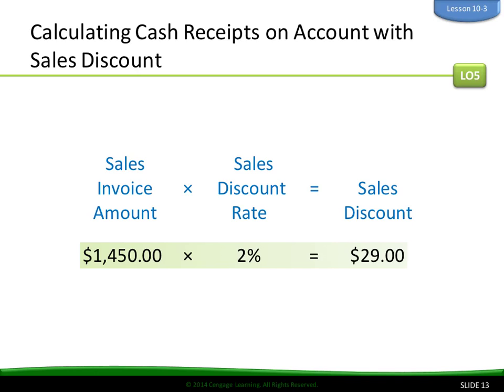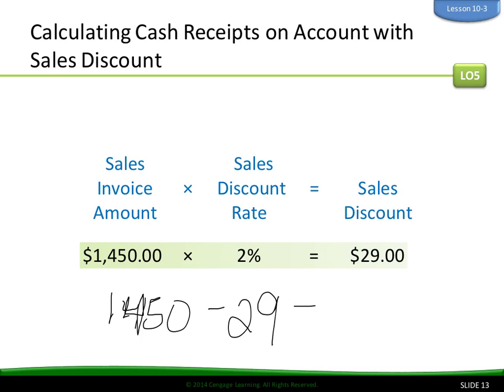Calculating cash receipts on account with a sales discount. The sales invoice discount is $29, so you subtract it. $1,450 minus $29 is $1,421.